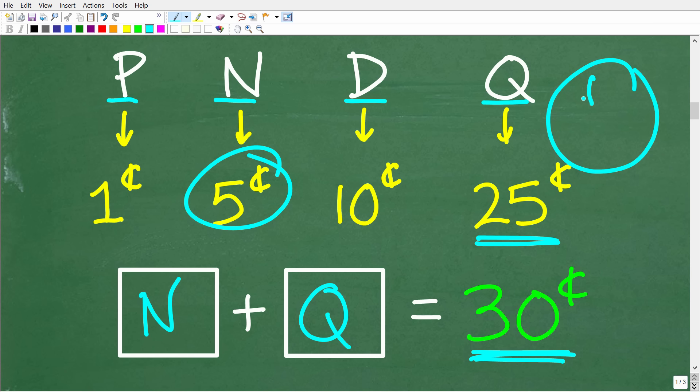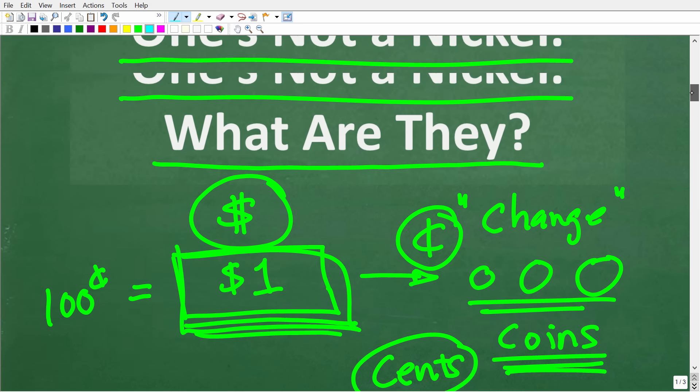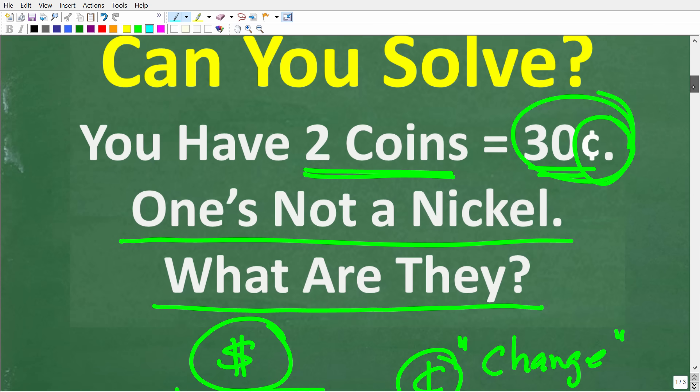Now, a lot of you might be saying, hey, Mr. YouTube math man, you got the problem wrong. The problem did not say that. The problem said what? It said one's not a nickel.